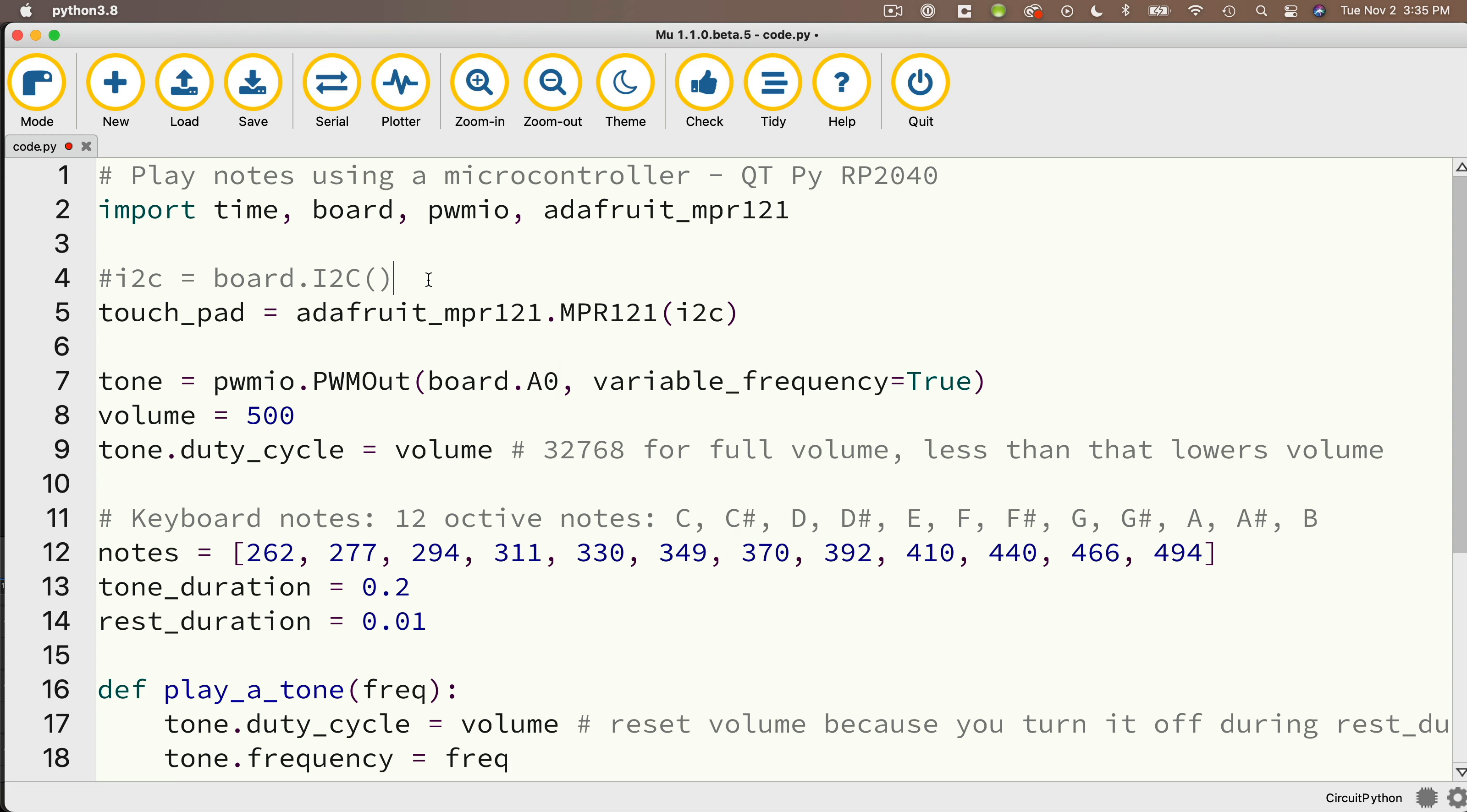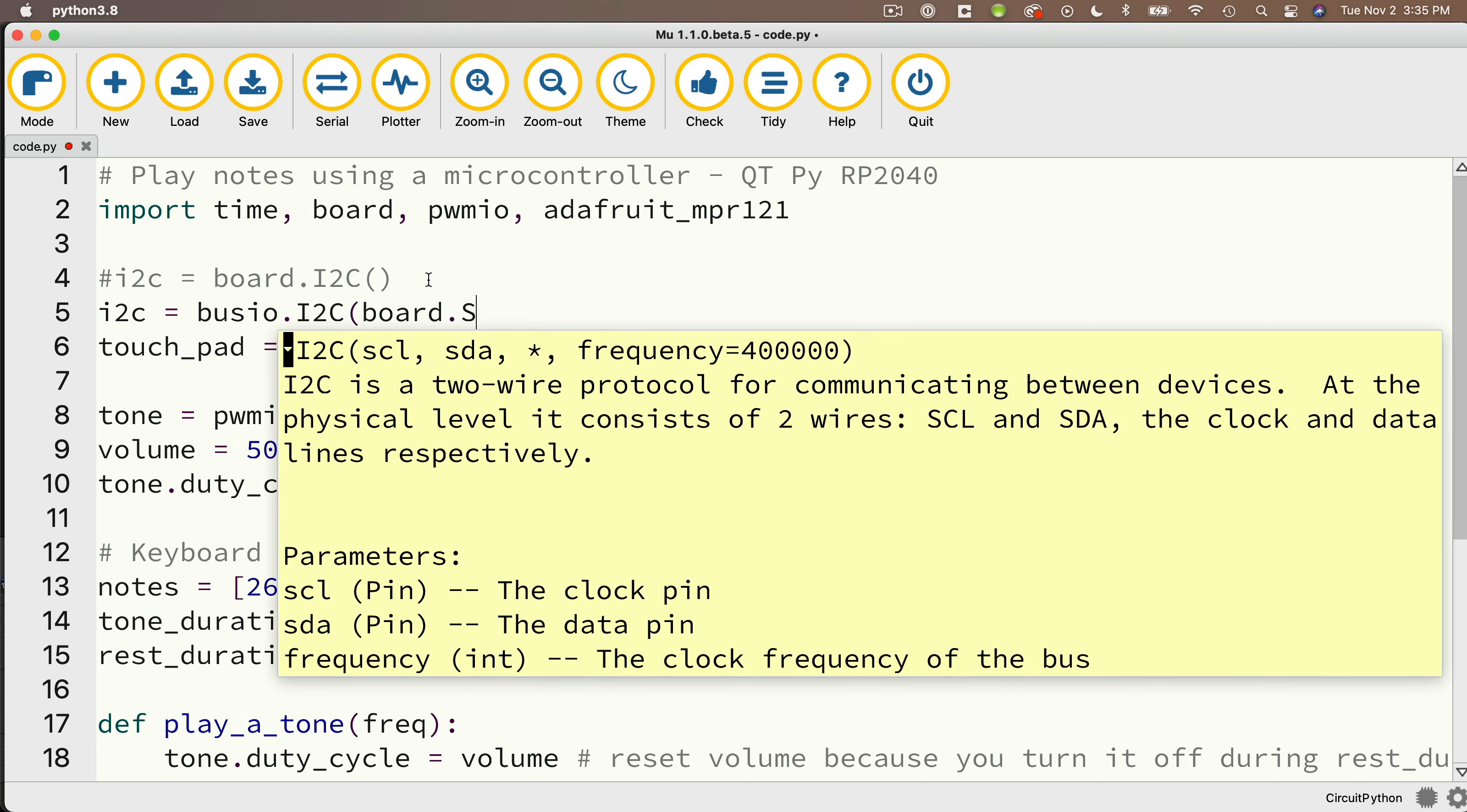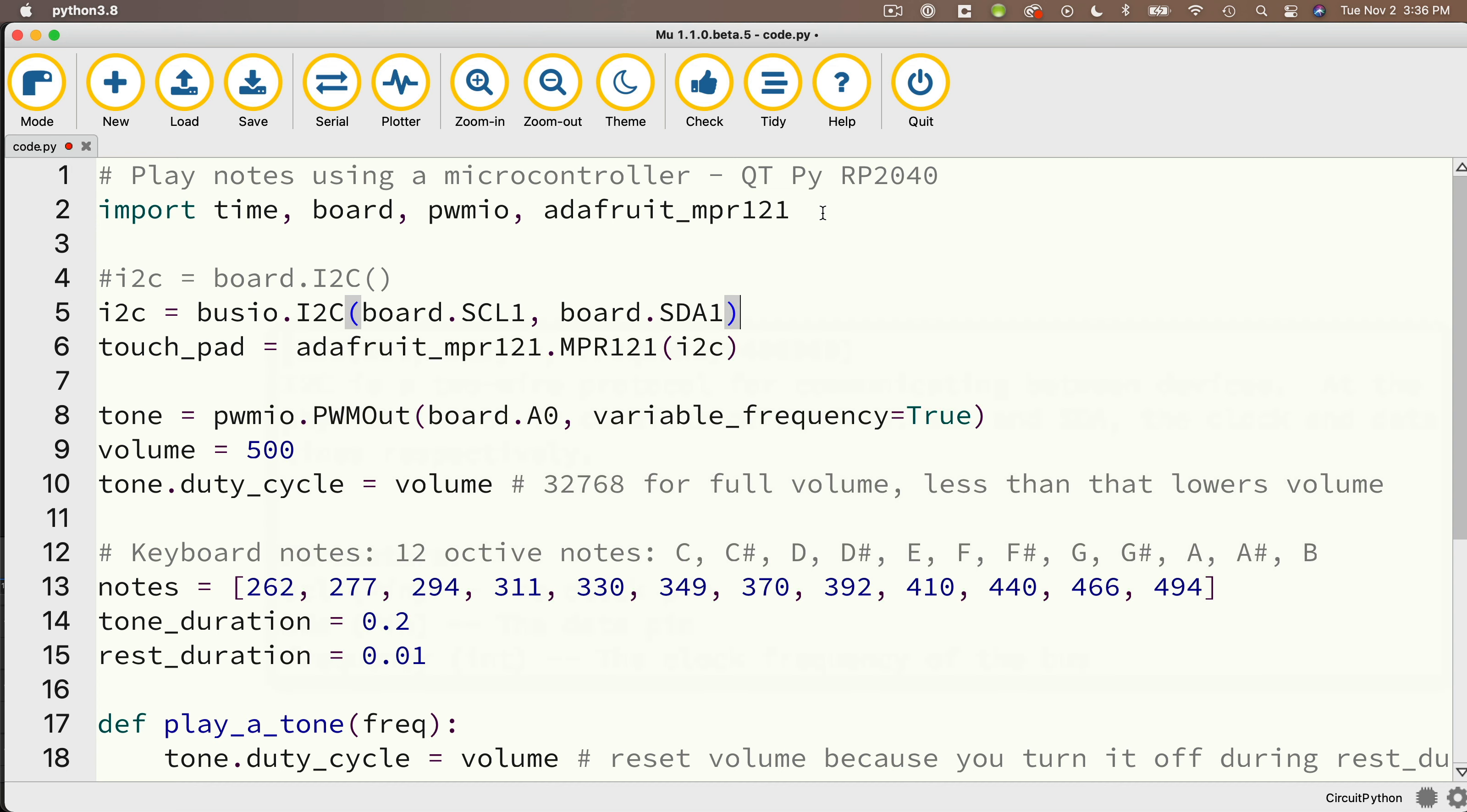Then I'm going to comment out the line where we create our I squared C object. And below, we're going to enter what we need to use for the CutiePie. Now the CutiePie is sort of a rare bird. Most CircuitPython boards will use the line that we have above. But for the CutiePie, we'll say i2c equals and we use busio.i2c. And in parentheses, we need to pass in board.SCL1, all caps, comma, board.SDA1, all caps. And we learned about that a couple of videos back. And since we're using busio, let's make sure that we import busio. Then we can save, open the serial monitor.